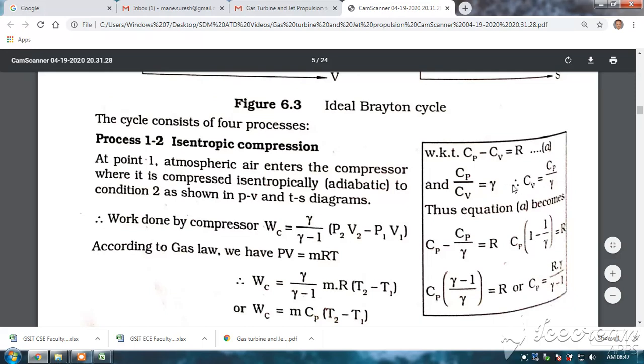Now, we have simplified. Cp is equal to Cv·γ. Thus equation becomes here. We are putting the value of Cv here now. Cp minus, instead of Cv, I will put Cp/γ is equal to R. Then, Cp in bracket 1 minus 1/γ is equal to R. Cp·(γ-1)/γ is equal to R or Cp is equal to R·γ/(γ-1). This value of Cp, because we are using Cp here, this value R·γ/(γ-1) is used.